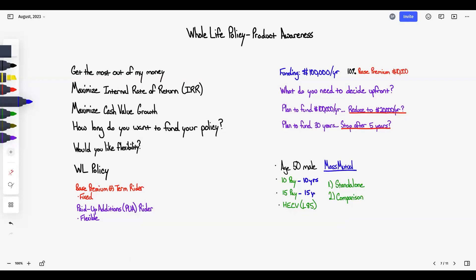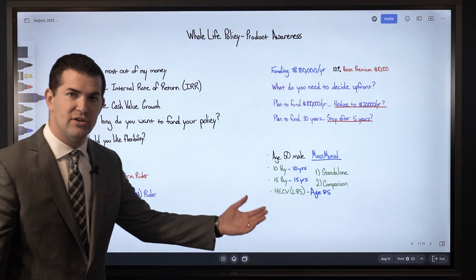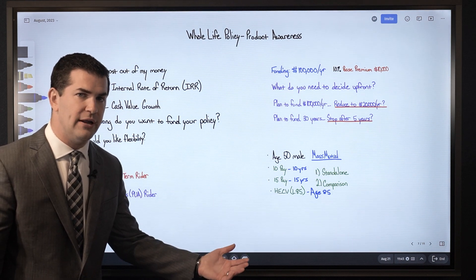for a maximum of 15 years, and then the high early cash value product I can pay into it up until age 85. So when determining how long you want to pay into the policy, the product selection gives you different funding periods.